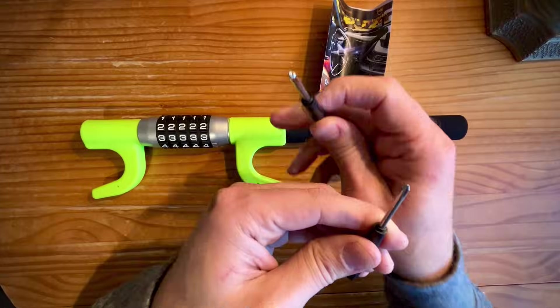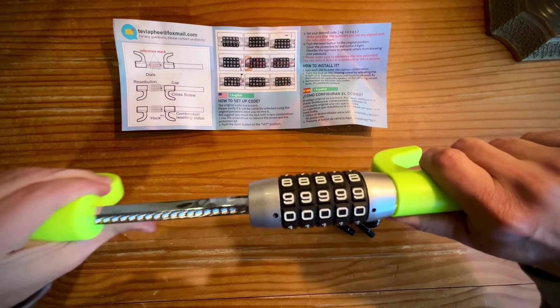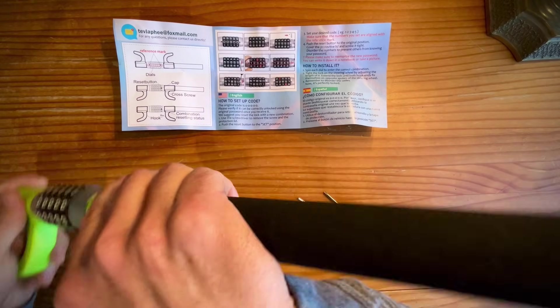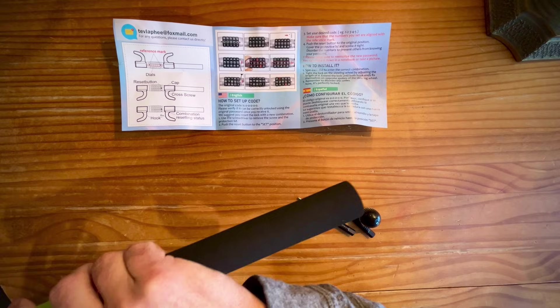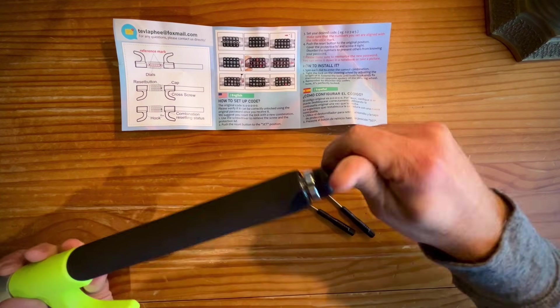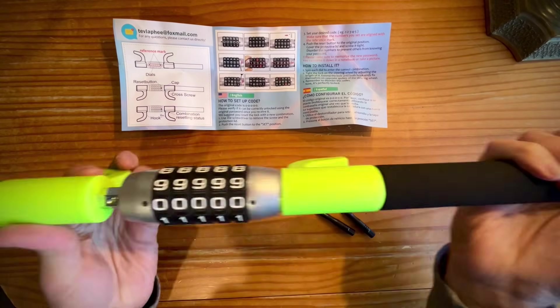You get a screwdriver and then this little guy here looks like a screwdriver, but it's not. It's actually going to help you set the password. So speaking of passwords, it comes out of the box all zeros. Five zeros is how you get in and then we're going to change it here in a second. I'll show you this little piece once we're in the car. That's actually a little bit more than meets the eye, but more on that later.